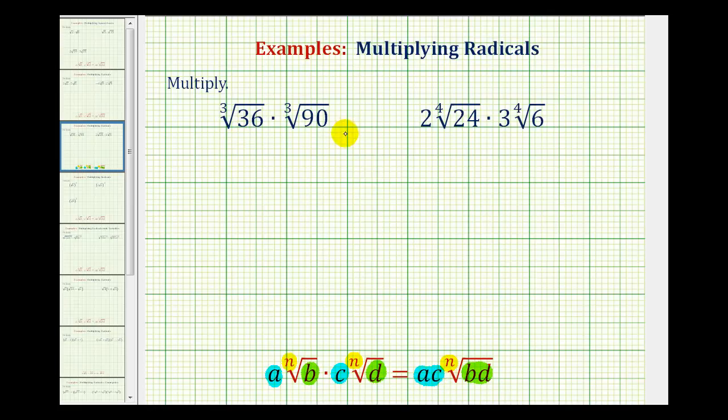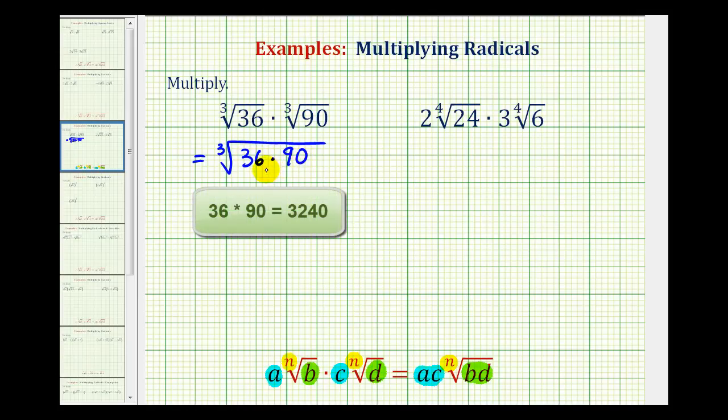So our first example, we have the cube root of 36 times the cube root of 90. Since they're both cube roots, this is going to be equal to the cube root of 36 times 90. And now we could find this product, but since we'll look at the prime factorization of this product in order to simplify, it's going to be less work to find the prime factorization of 36 and 90, rather than the product of 36 and 90.